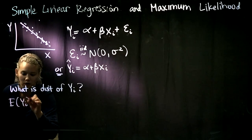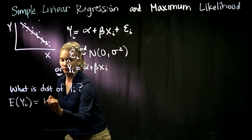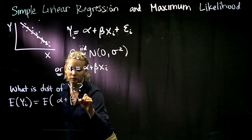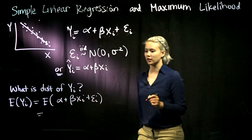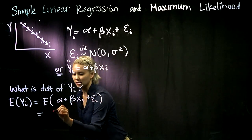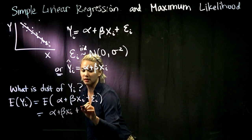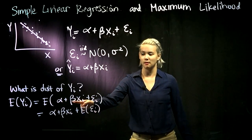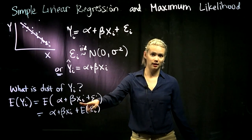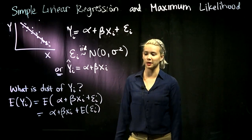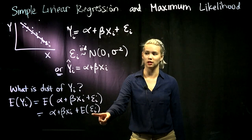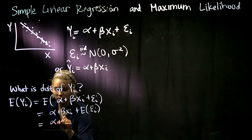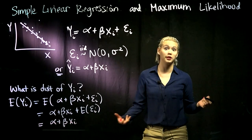It probably helps first to think about what is the expectation of the Y_i's. We know that Y_i equals alpha plus beta times X_i plus epsilon_i. Using linearity of expectation, we get alpha plus beta X_i plus the expectation of epsilon_i. Alpha is a parameter — a constant — beta is a constant, and we can think of the data as constant as well. So only epsilon_i remains inside the expectation, and since the expectation of epsilon is zero, the expectation of Y_i is just alpha plus beta times X_i.